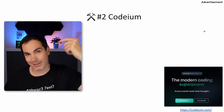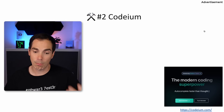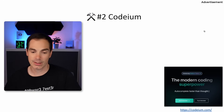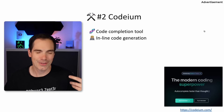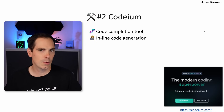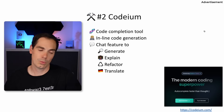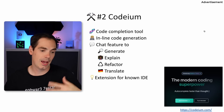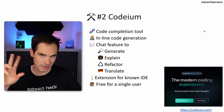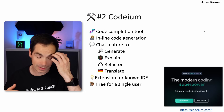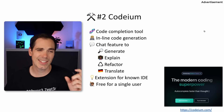The next tool is Codium. If you go to codium.com — links are in the video description — the website says 'the modern coding superpower.' Codium offers inline code generation similar to GitHub Copilot, but free. It has a chat feature to generate code, explain code, refactor code, and translate code, which is really handy. You can use it as an extension for known IDEs such as IntelliJ and others. It's free for single users — if you want to use it as a company, there is a paid plan.